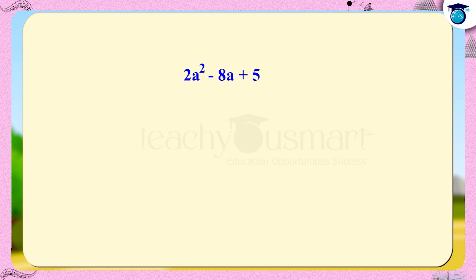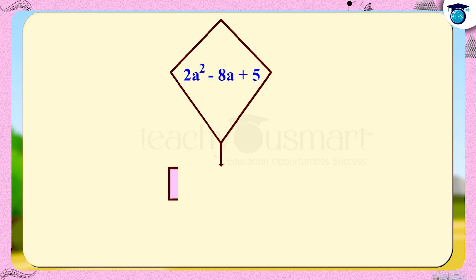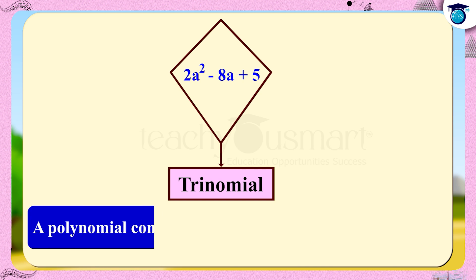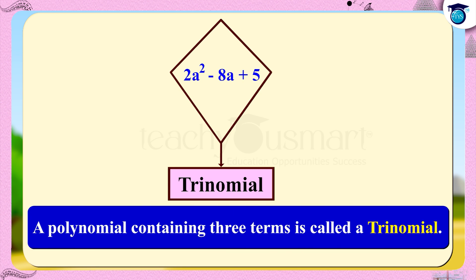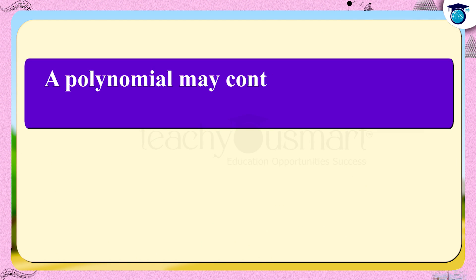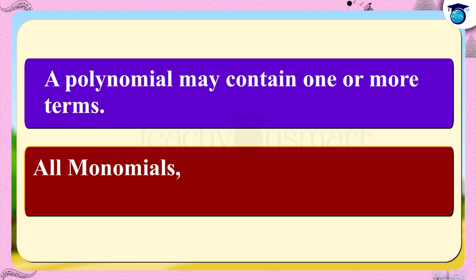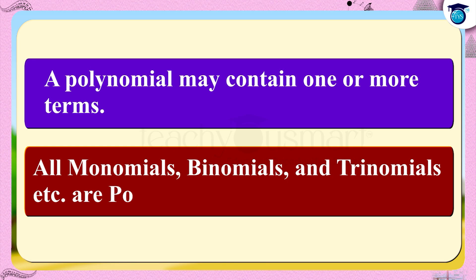Now consider the polynomial 2a squared minus 8a plus 5. There are three terms: 2a squared, minus 8a, and 5. So this polynomial is called a trinomial. A polynomial containing three terms is called a trinomial. Hence, a polynomial may contain one or more terms. But remember that all monomials, binomials, trinomials, etc. are polynomials.